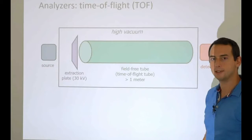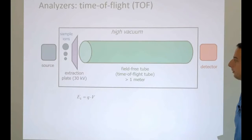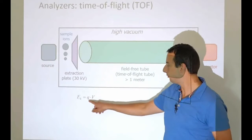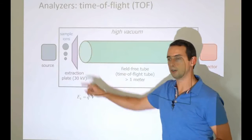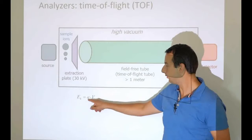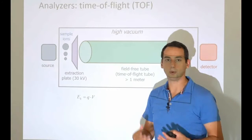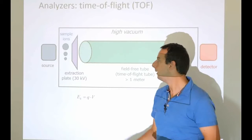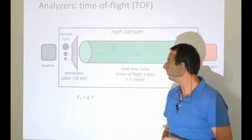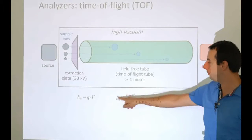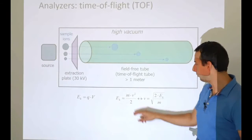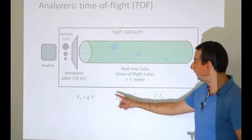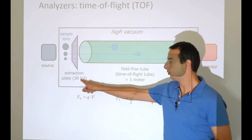Let's have a look at a small animation to see what happens in this time-of-flight analyzer. We have our sample ions, and they are being moved by the extraction plate. They receive a kinetic energy that is equivalent to the charge of the individual ion and the voltage that we have applied — so the strength of the field and the charge. Obviously, if you have twice the charge, you will feel the field twice as strongly. A 2-plus ion will feel the same field with twice the strength of a 1-plus ion. That is the kinetic energy that these ions receive. This kinetic energy is under our control because it comes from the voltage, which is something we set.